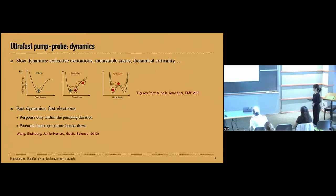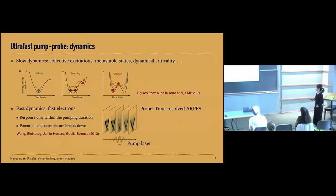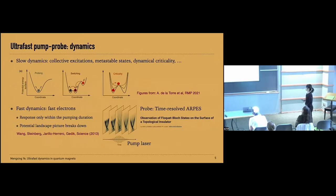In the fast dynamics, if the pump is too short to affect the system using this effective potential picture, there is still a strong effect due to light-matter interaction, but that dynamics is very fast — it is due to the dynamics of the faster electrons. We would expect to see this response only during the pump duration. One nice example is the observation of Floquet-Bloch states on the surface of a topological insulator. You can see from the probe — a time-resolved ARPES at different time delays — that at the peak of the pump laser, we see replicas of Bloch bands: these are the Floquet bands.